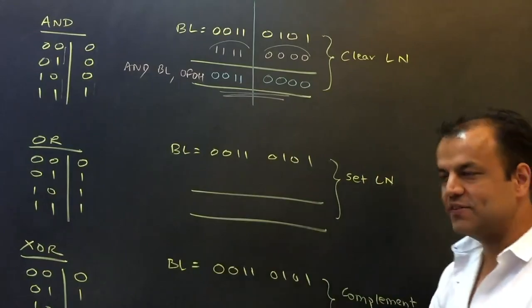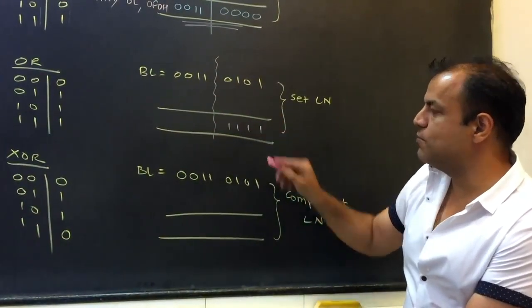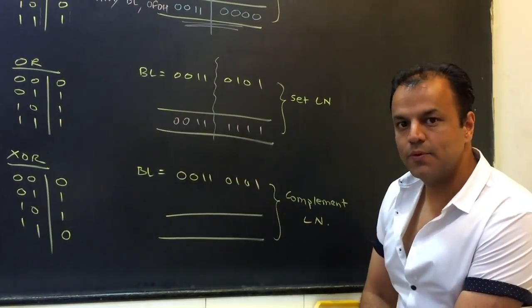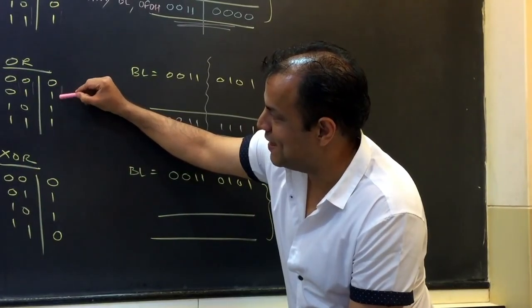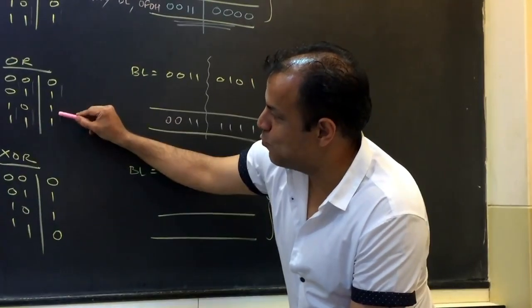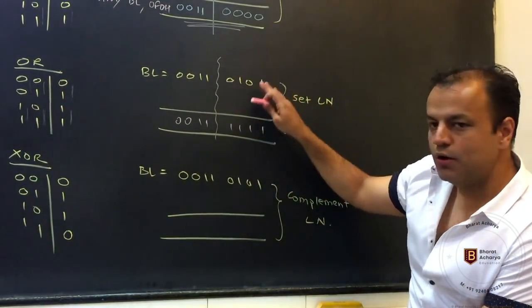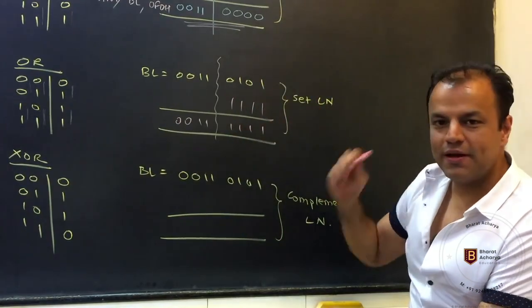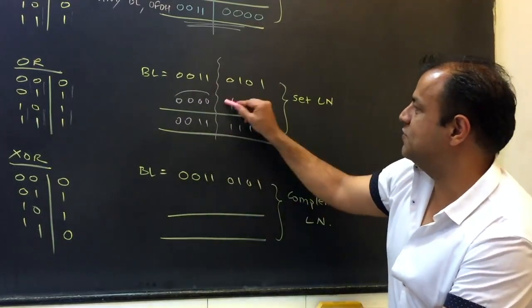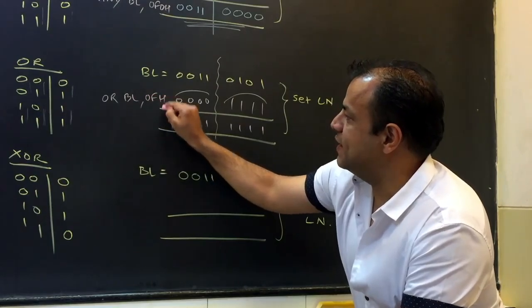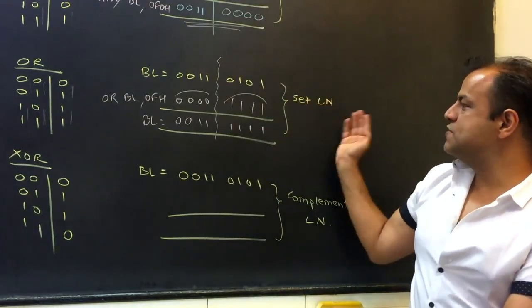Similarly, one more example. BL is 35. Again the same number, 35. This time, I want you to set the lower nibble. Set the lower nibble means lower nibble should become all 1s but higher nibble should remain the same. What do you do now? AND, OR, XOR? Yeah, OR. Anything you OR with 0 remains the same. But anything you OR with 1 becomes 1. So if you want to make the lower nibble 1, OR all these bits with 1, whatever they were, they will become 1. But OR all these bits with 0, anything OR with 0 remains the same, anything OR with 1 becomes 1. So what is this number? 0F. OR BL with 0FH. The result will come back in BL. Higher nibble will remain the same, lower nibble will become all ones. So to clear you use AND, to set you use OR.